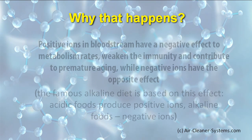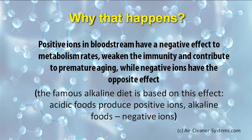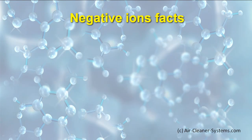Positive ions in the bloodstream have a negative effect on metabolism rates, weaken the immunity, and contribute to premature aging, while negative ions have the opposite effect. The famous alkaline diet is based on this effect — acidic foods produce positive ions, while alkaline foods produce negative ions.